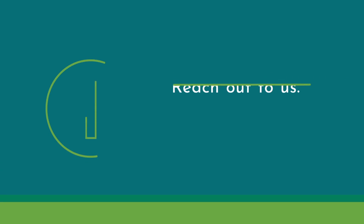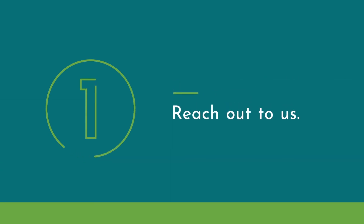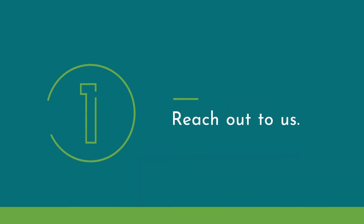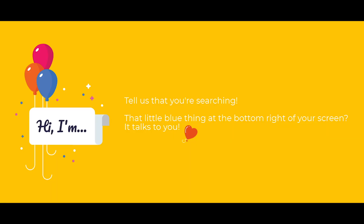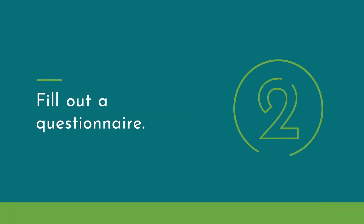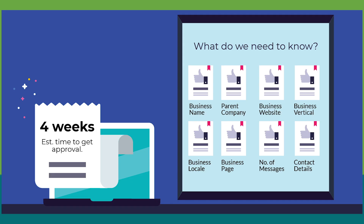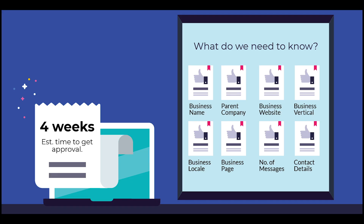The process is divided into four steps. Step one: reach out to us. Let us know you're in the market for a WhatsApp chatbot — our team will sit down with you, understand your needs and answer any of your questions. Step two: fill out a questionnaire. To get access to your APIs, you are required to meet certain parameters, so you are asked a series of questions, the answers of which are given to the WhatsApp team.